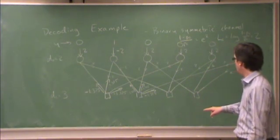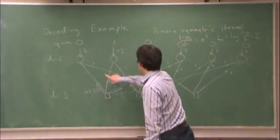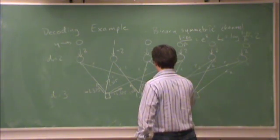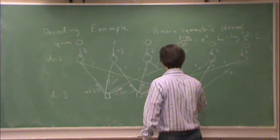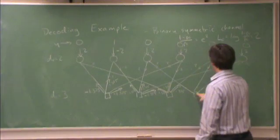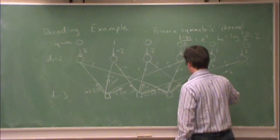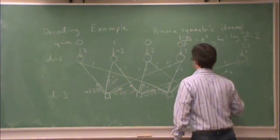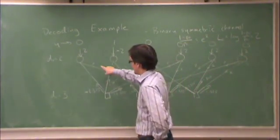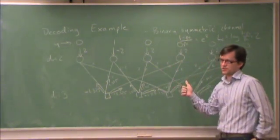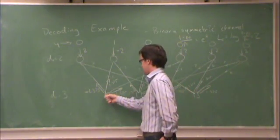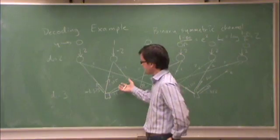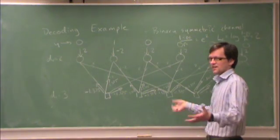Over here, this is an interesting case — all of the inbound messages are plus 2. So therefore all of the outgoing messages will be the same: they will all be plus 1.325. Similarly over here, all of the inbound messages are the same sign and magnitude, so all the outgoing messages will be 1.325. It's interesting to note that the magnitude of all the downward-going messages was 2, and the magnitude of all the upward-going messages is smaller. So at check nodes, you tend to lose log-likelihood ratio.